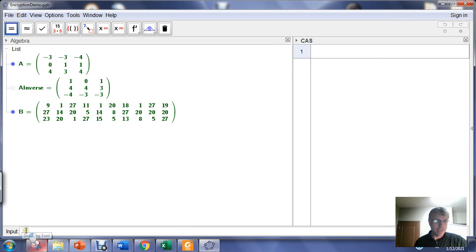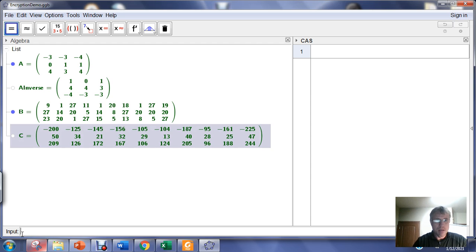So in this case, down here in the input bar, if I go C equals the matrix A times B, pop, we get this encoded message right here. Here's the encoded message - this would be what you would send to the other person.